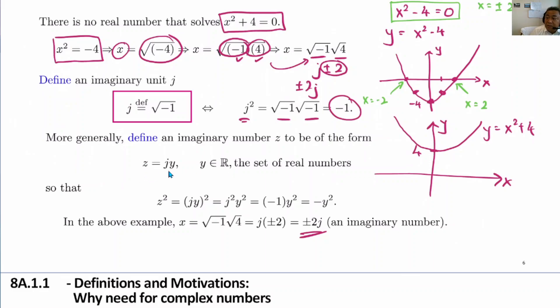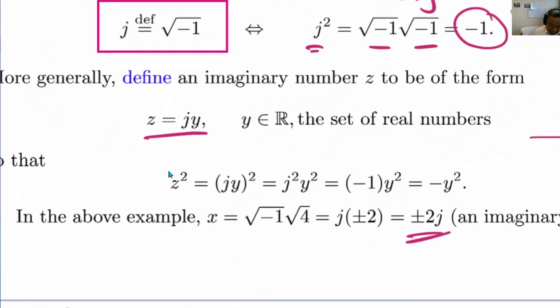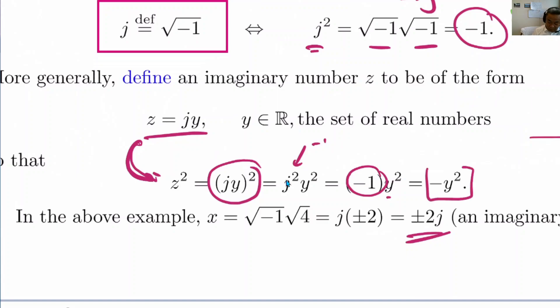Alright. What about when z is equal to jy? Well, when z equals jy, what is z squared? So basically we have jy bracket square. We can move the square inside this jy, so it's j squared times y squared. And j squared, as we have known now, it is minus 1, so it is minus 1 times y squared, which is this solution over here.